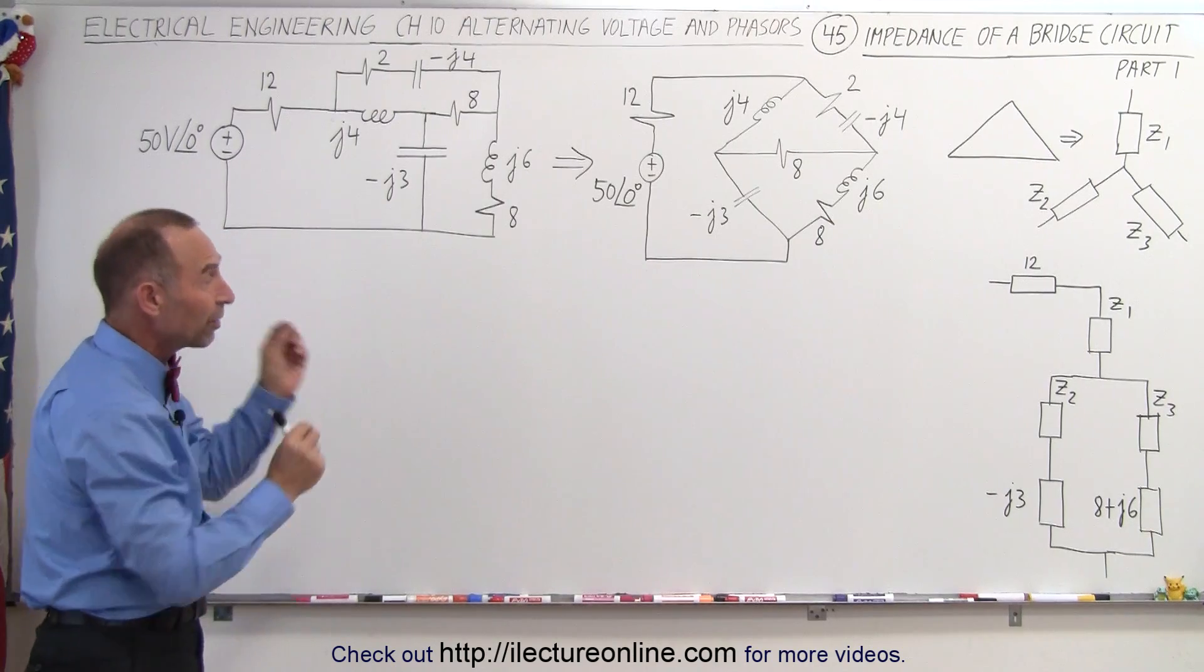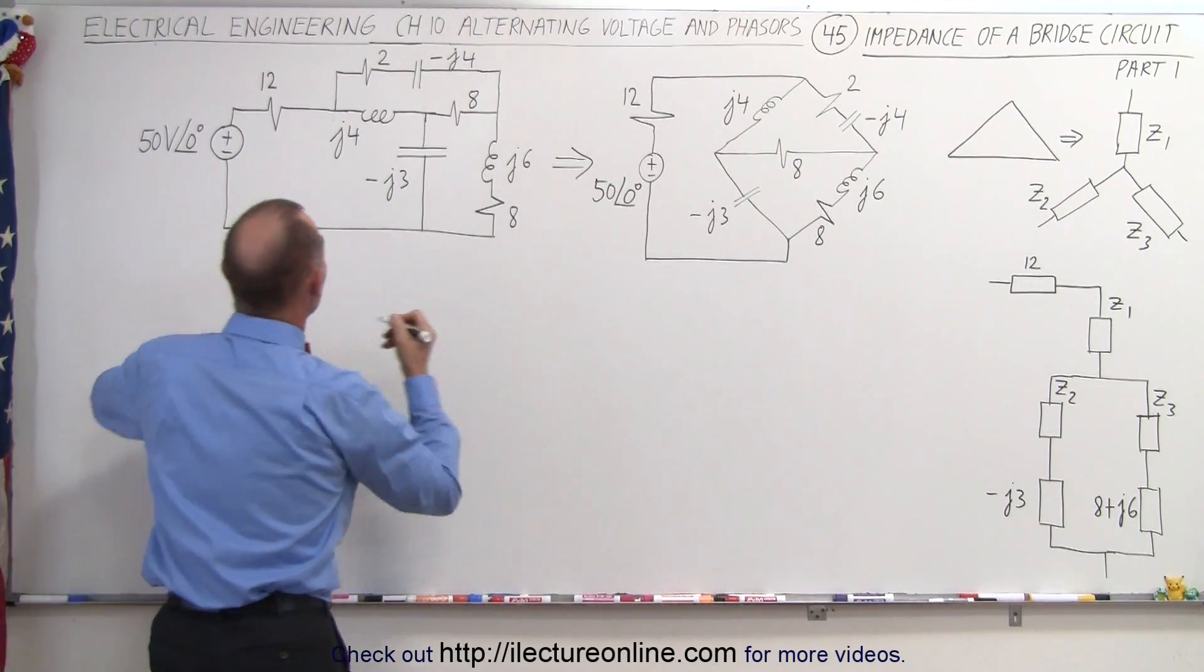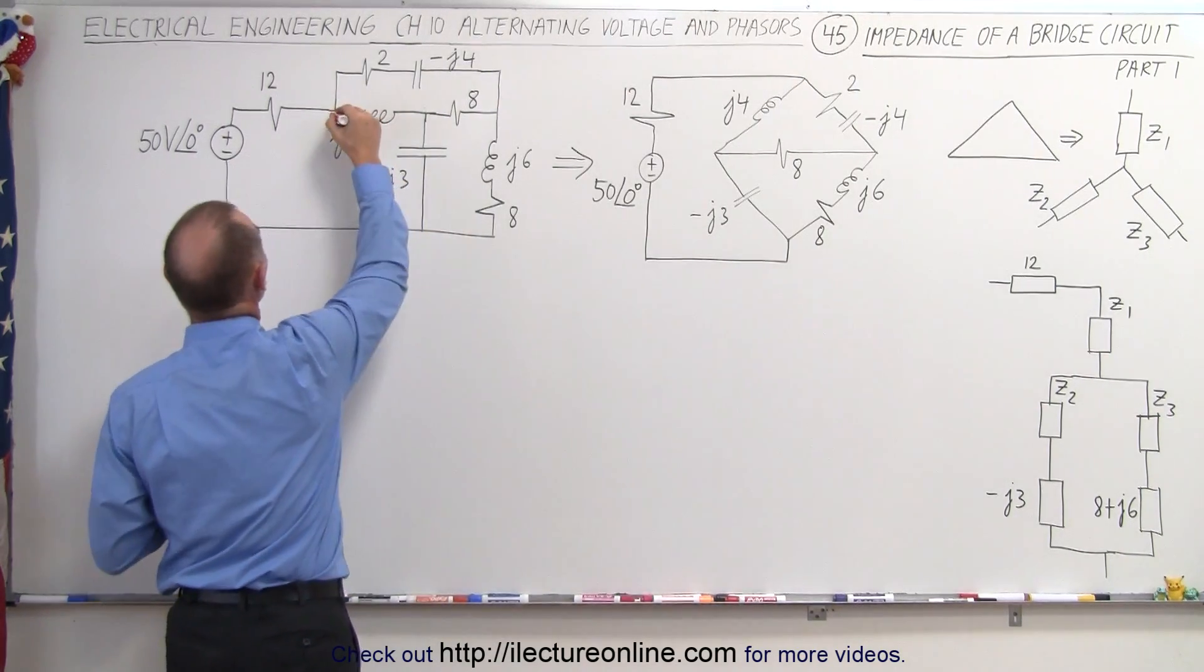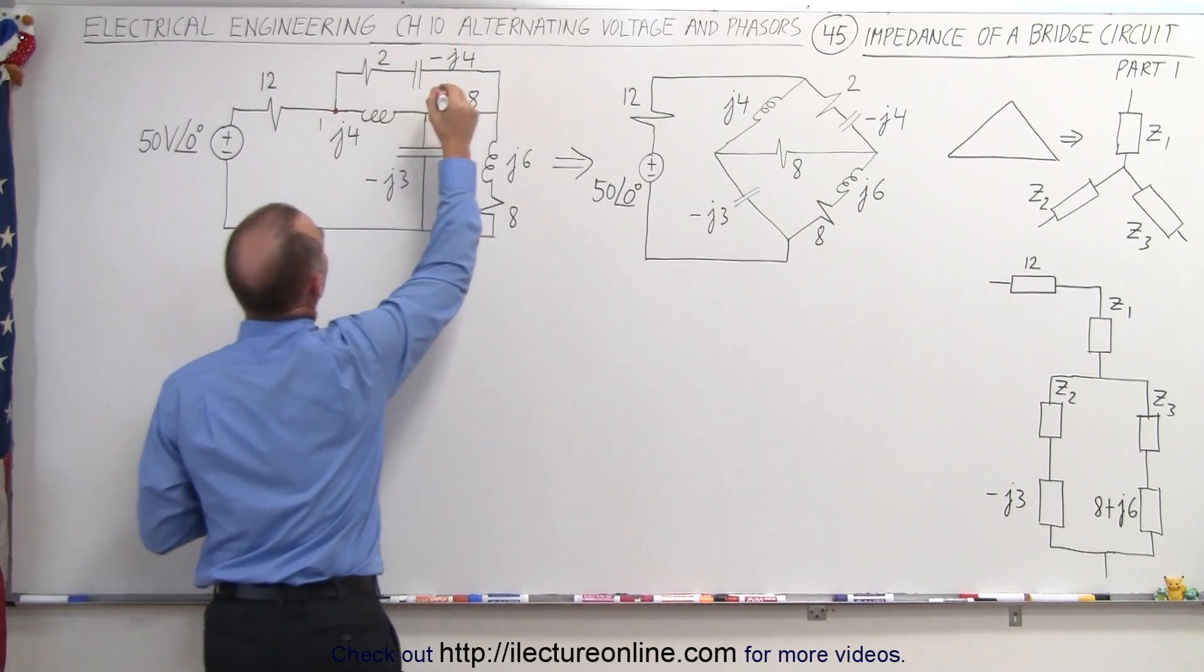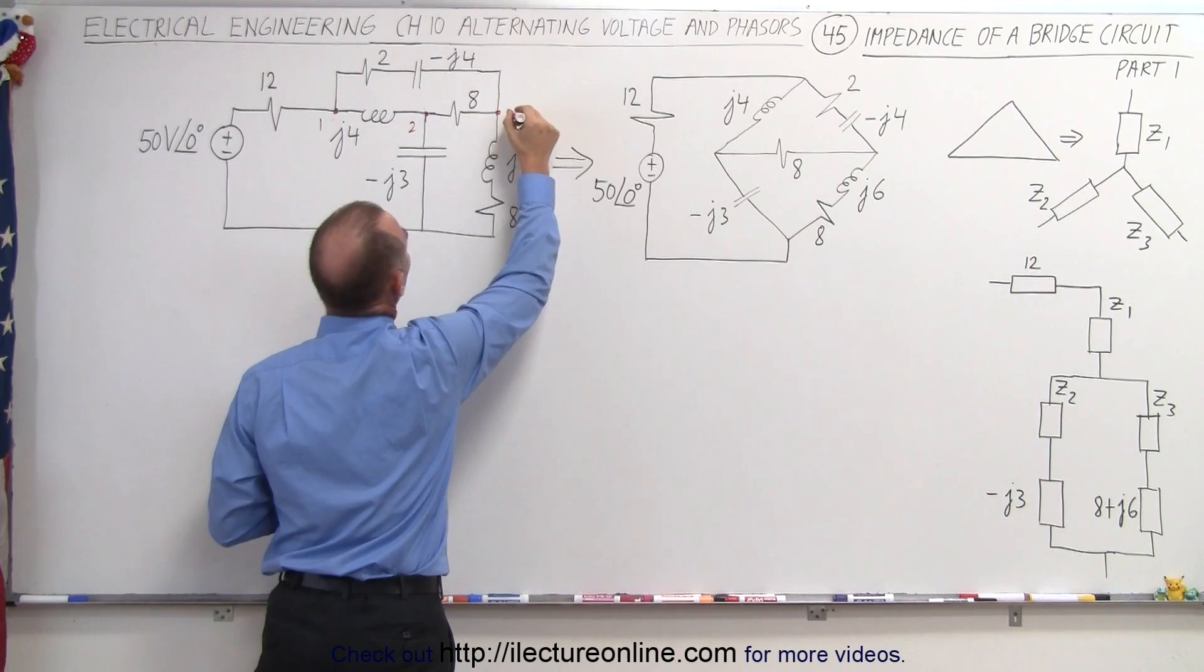Well, sometimes by redrawing the circuit, it may become obvious. So let's go ahead and label some of our branch points. Let's call this branch point 1. Let's call this branch point 2, and let's call this branch point 3.